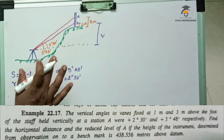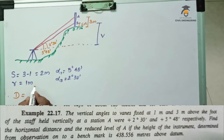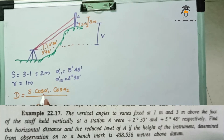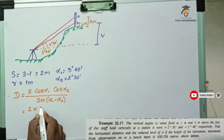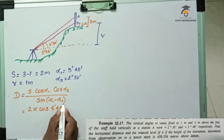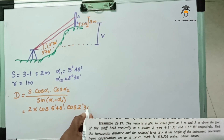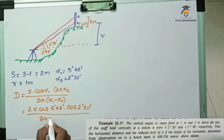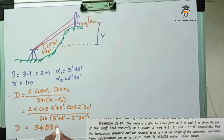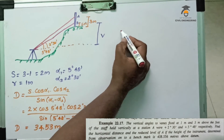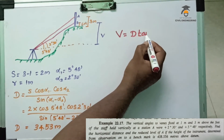Now let's write the formula and substitute values. The horizontal distance D equals S·cosα₁·cosα₂ divided by sin(α₁ minus α₂), which equals 2 times cos 5°48' times cos 2°30' divided by sin(5°48' minus 2°30'). Therefore the horizontal distance D equals 34.53 meters.